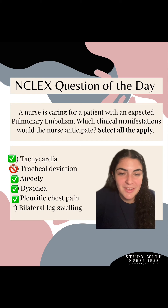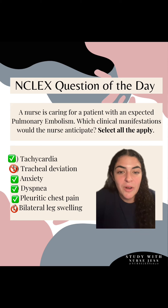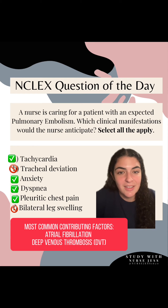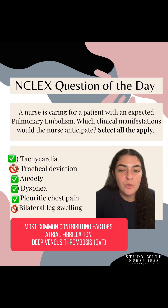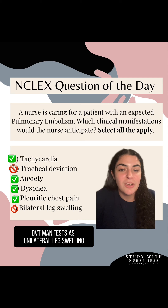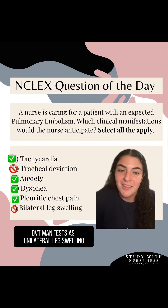F — bilateral leg swelling. This is incorrect. Remember, a pulmonary embolism is due from a clot. These clots typically originate from atrial fibrillation or a deep venous thrombosis, found in your lower extremities. When you have a pulmonary embolism caused by a DVT, it's typically going to present as unilateral leg swelling — only one leg is swollen.